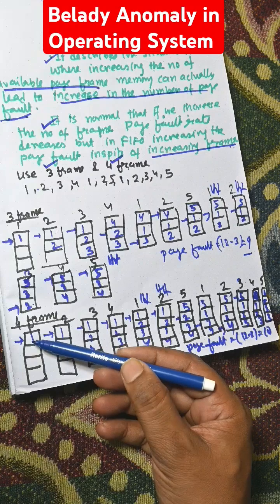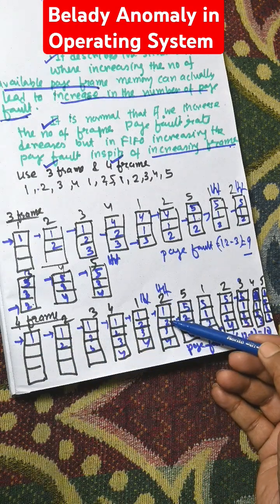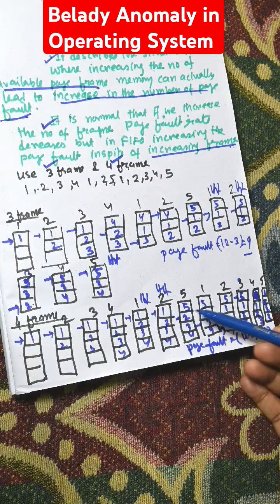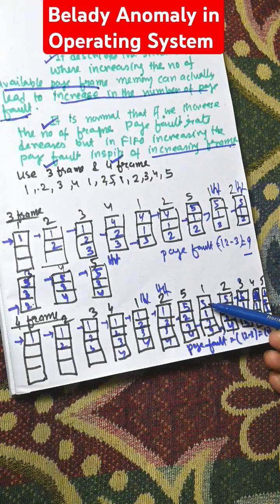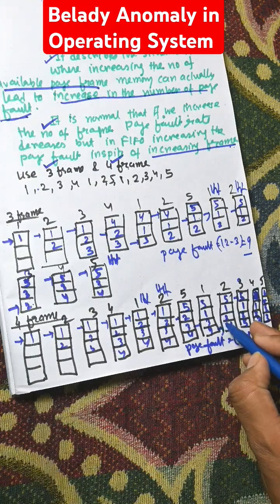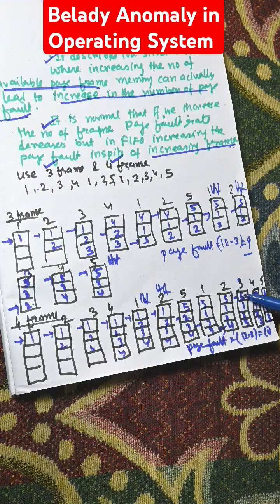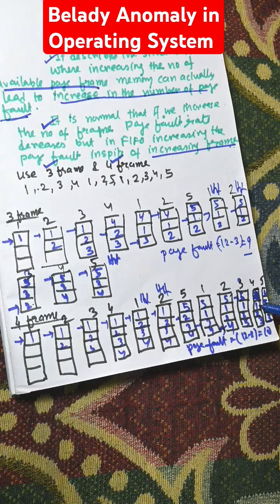Now increasing the number of frames to 4: pages 1, 2, 3, 4 are loaded. Page 1 is a hit, 2 is a hit. Page 5 replaces position 1, and the pointer shifts. Then page 1 is placed in position 2, page 2 in position 3, page 3 in position 4, and page 4 is placed in position 5. Then page 4 is replaced in page frame 5.